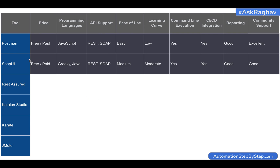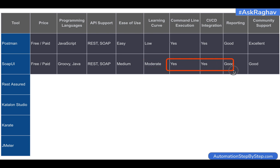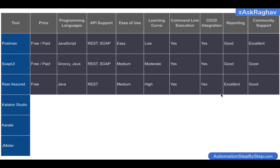Coming to SoapUI — SoapUI again comes in free and paid versions. I have observed that the free version has some limitations, and if you want to create a complete, full-fledged API automation testing project, you will have to use some features from the paid version. It has support for Groovy and Java programming languages, and it can test both REST and SOAP APIs. Ease of use is a little more difficult than Postman — medium category. The learning curve is moderate. It has command line execution, CI/CD integration, good reporting options with HTML and PDF reports, and very good community support.